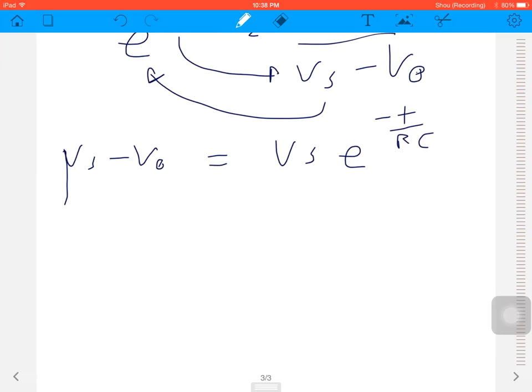VS minus V out, and we got V out equals VS minus VS times e to the power of minus t over RC.